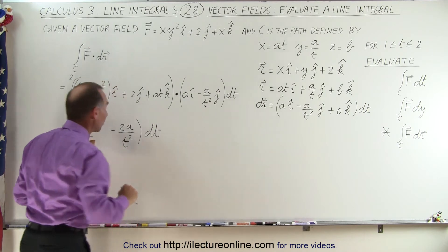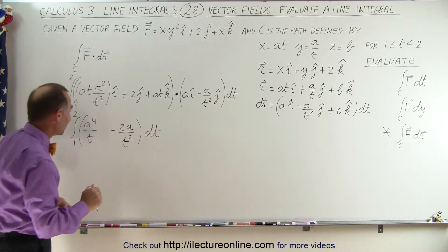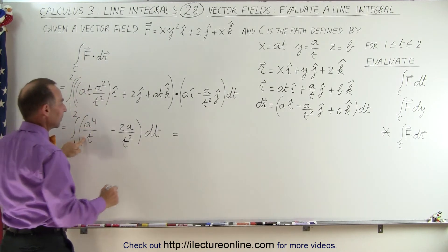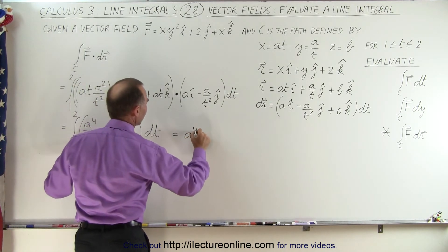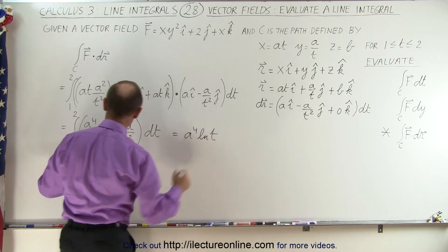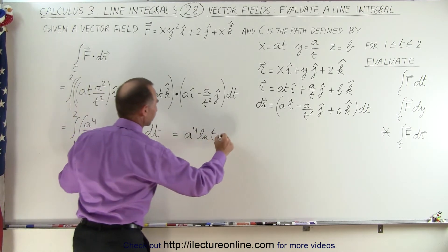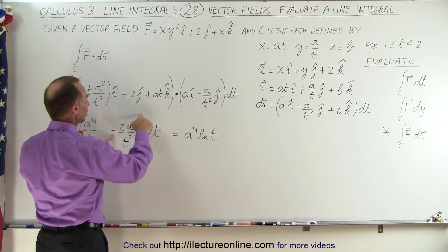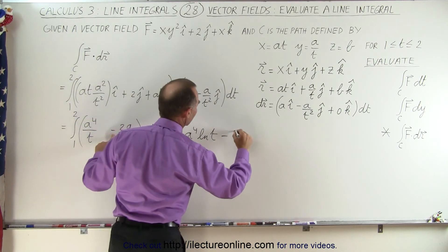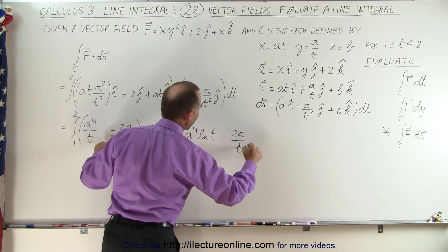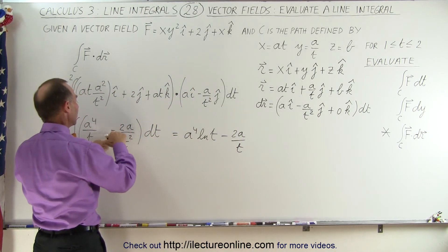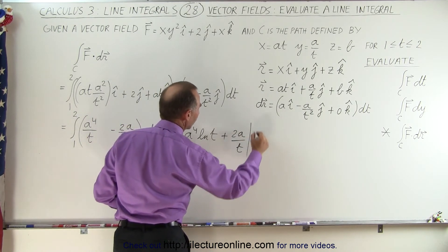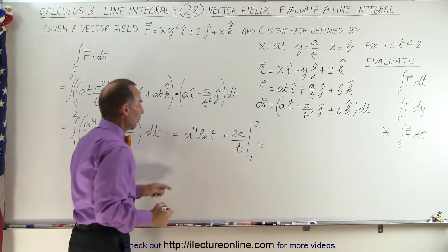Now we're ready to integrate. We have a⁴/t, which integrates to a⁴ times the natural log of t. Then minus 2a·t⁻² — adding one to the exponent gives t⁻¹, so we get 2a divided by t, divided by minus 1, which makes it a plus. We evaluate this from 1 to 2.